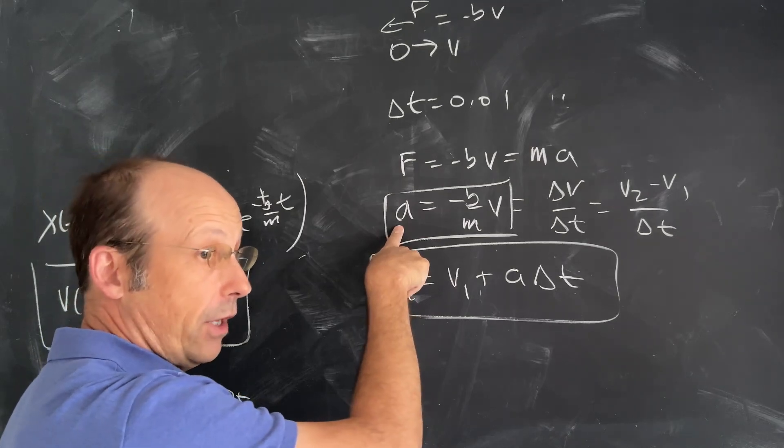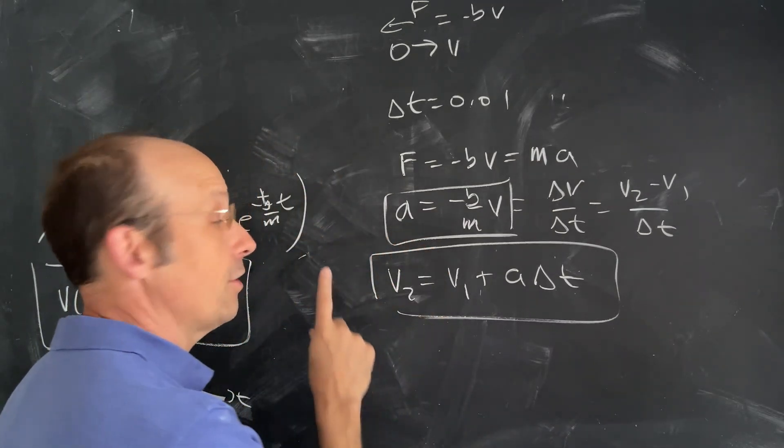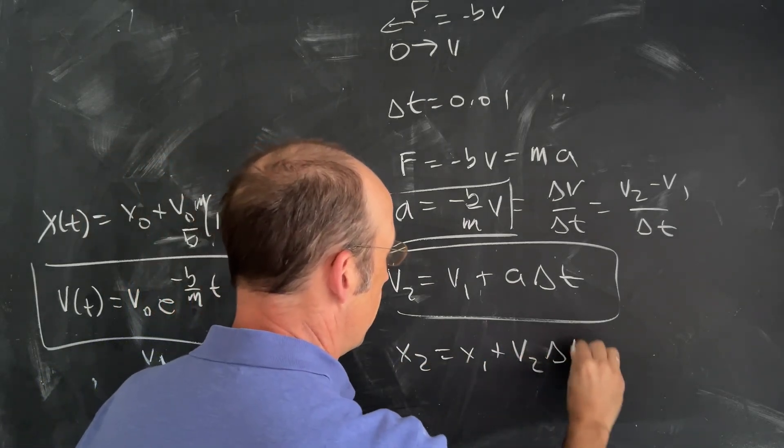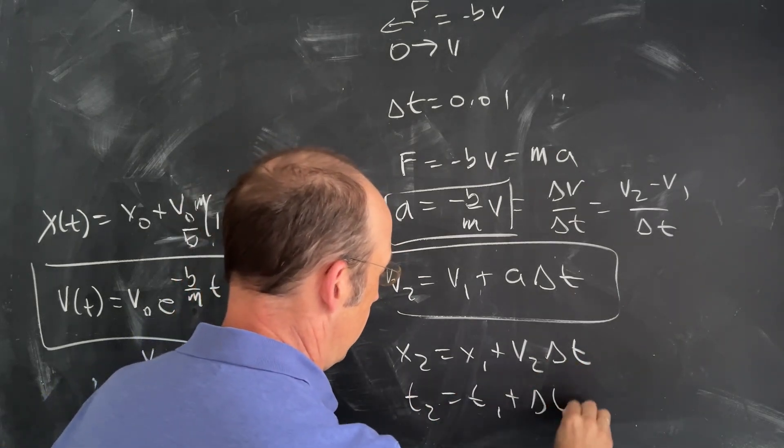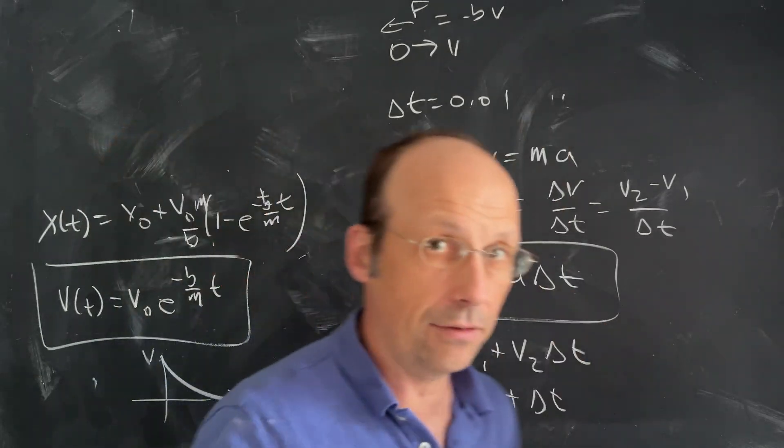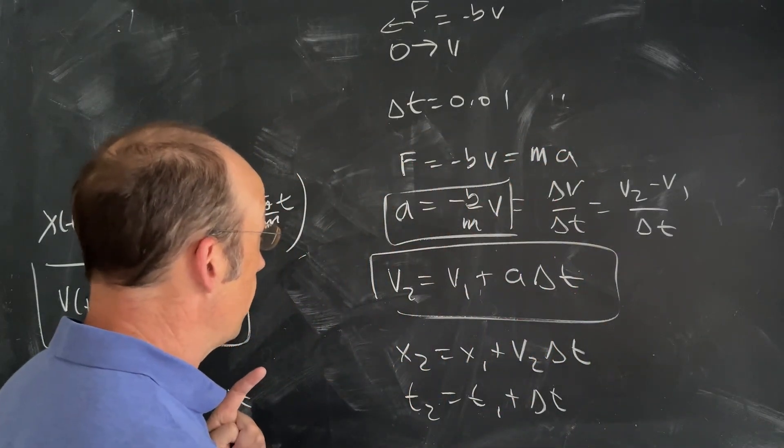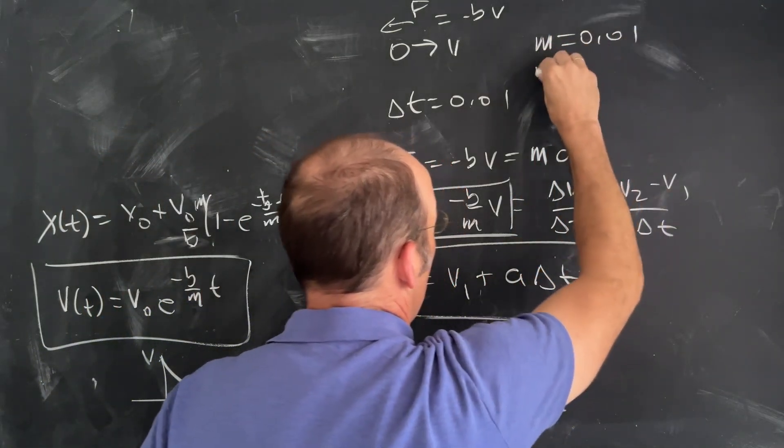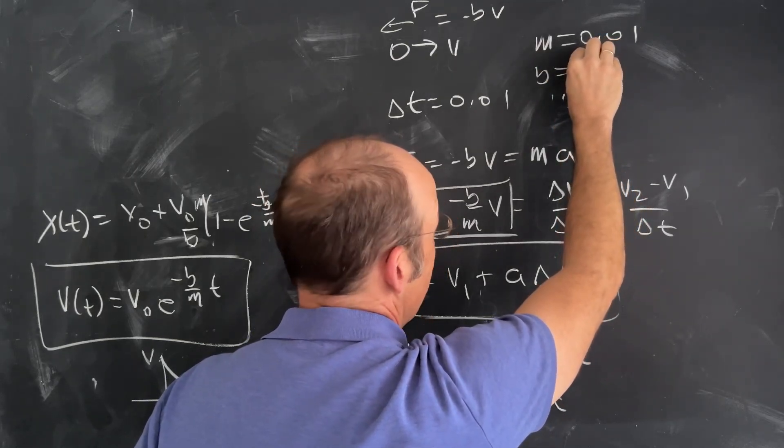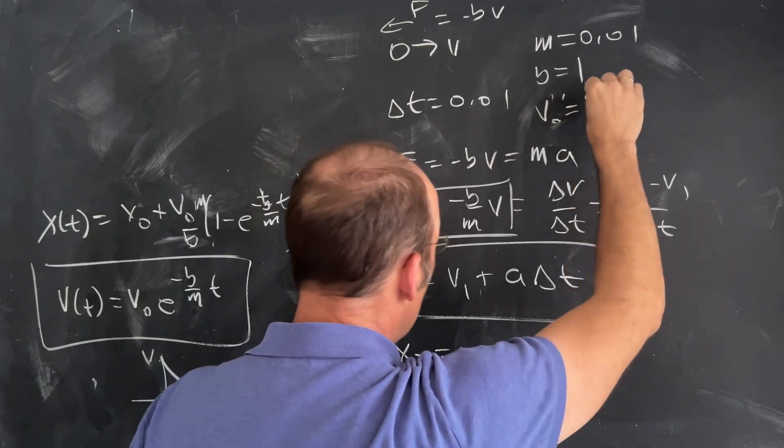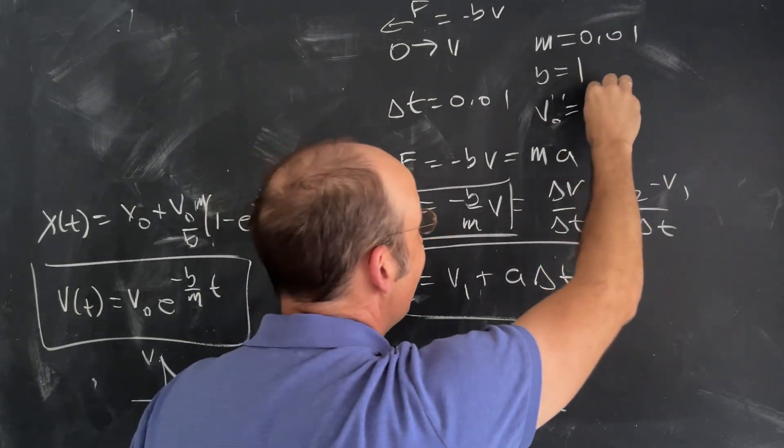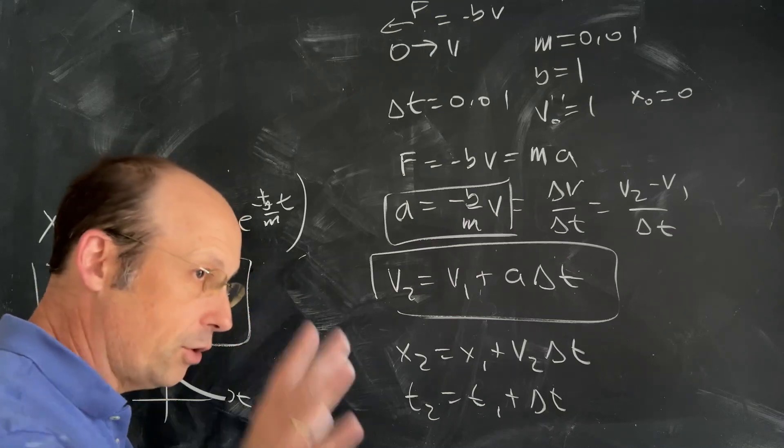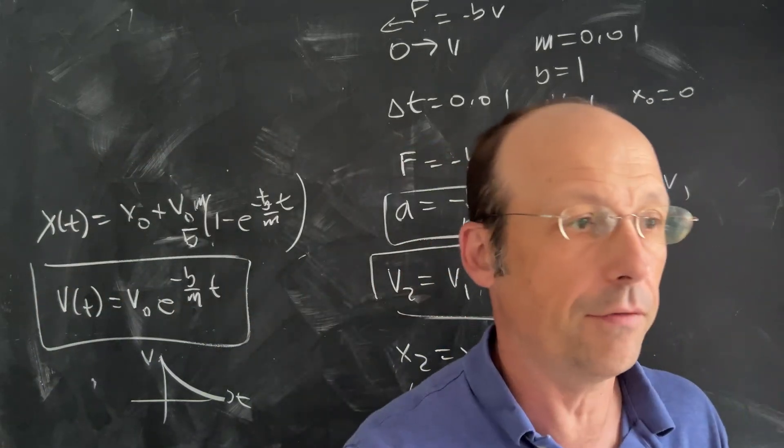I can calculate the acceleration and from the acceleration I can update the velocity. Then I can assume the velocity is constant and update the position. x₂ is x₁ plus v₂ delta t, t₂ is t₁ plus delta t. I can do one time interval and then do the next and the next. Let's pick some numbers. I'm going to say m is 0.01, b equals 1, v₀ is 1, and x₀ equals 0. Let's do this in Python and see if we get the same thing.